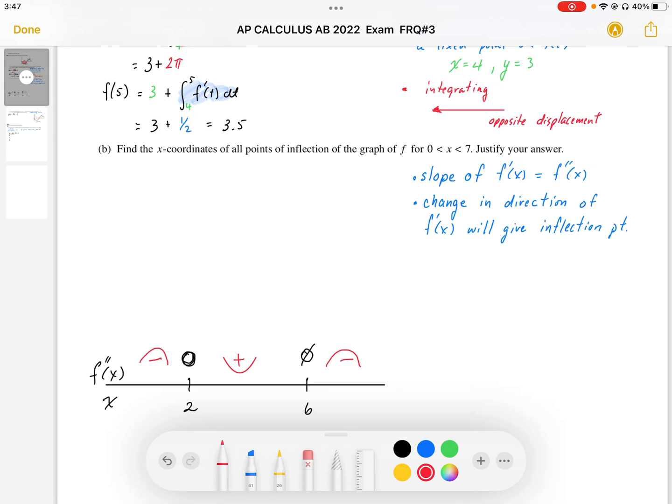So I have inflection points at x equals 2 and x equals 6. Inflection occurs at x equals 2 and x equals 6. So those are my two points of inflection, and I can justify that because I know that the change in direction, or the change in the second derivative from positive to negative, or negative to positive, will give me an inflection point.